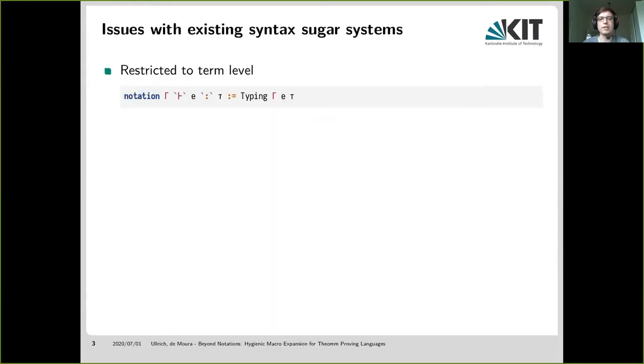In Lean 3 and similar ITPs, you have this notion of mix-fix notations, at least for introducing syntax sugars. So for example, we can say if we have terms separated by these tokens, then we will translate that to the right-hand side term. But that is already a fundamental limitation that it only works for terms. We cannot, for example, write a notation that expands to a lemma, say, generates a backward and forward lemma from an if-and-only proof.